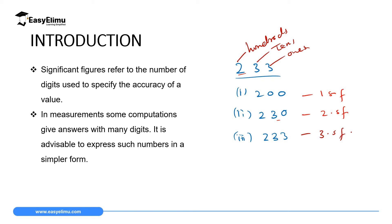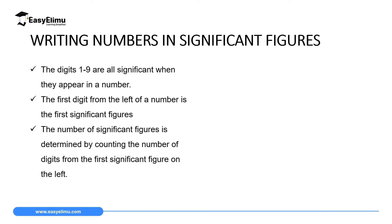Sometimes during science experiments, measurements, and even computations, we get very complex or large numbers, and it is advisable for us to write them in significant figures. When assigning significant figures, it is very important to note that any digit which lies between 1 and 9 is always significant when it appears in a number. For example, the number 1487 — all these digits are significant since they are within the range of 1 to 9.